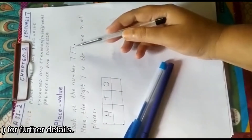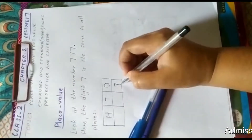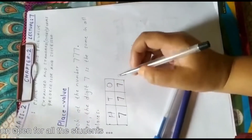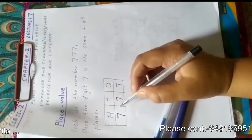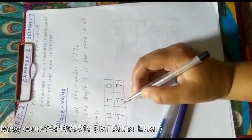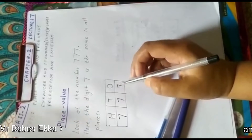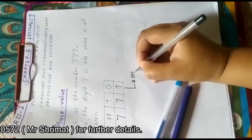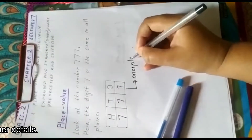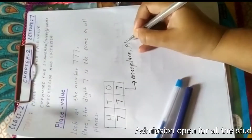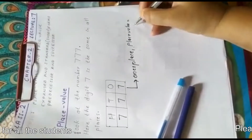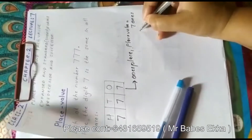You can see here: at ones place there is also 7, at tens place there is also 7, and at hundreds place there is also 7. But each digit has a different place value. The right digit you can see is at the ones place. So its place value is 7 ones, which means 7 into 1 equals 7.